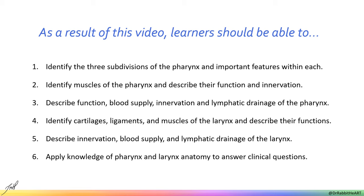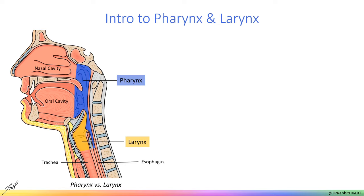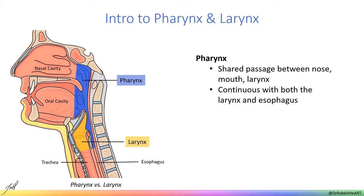In this mid-sagittal section of the head and neck, we can see the oral and nasal cavities as well as the larynx in yellow and pharynx in blue. The pharynx is a common space in the back of the throat where the nasal cavity, oral cavity, larynx, and esophagus all meet. This region is shared by both the respiratory and digestive tracts and thus is a shared passageway for both food and air. The larynx is known as the voice box but also functions as an airway. It is continuous with the trachea and should only conduct air.